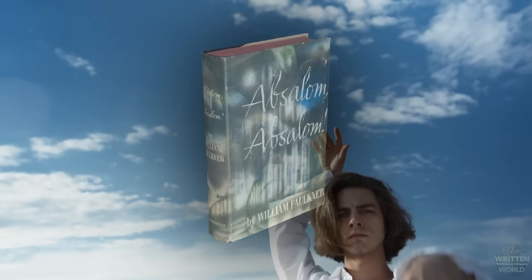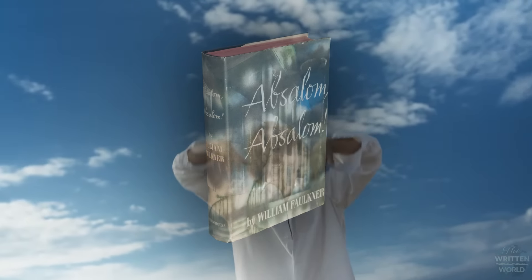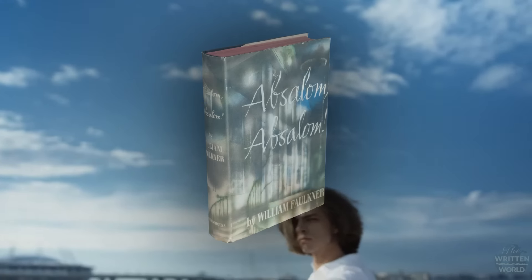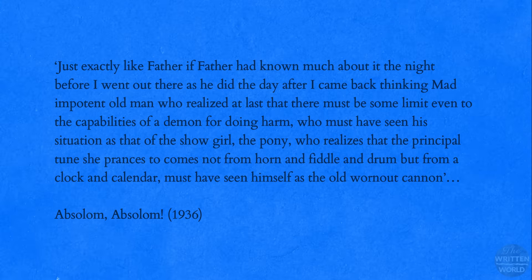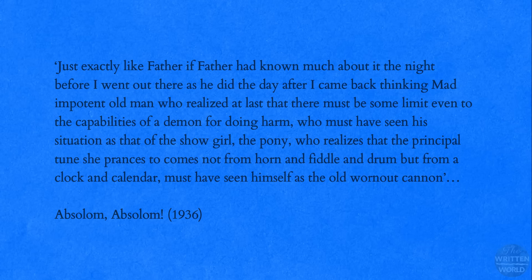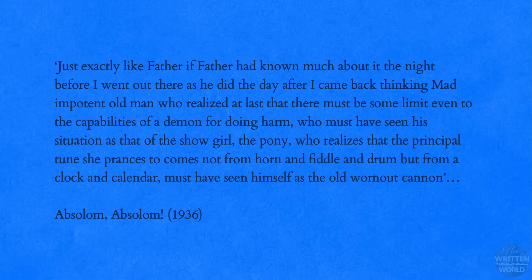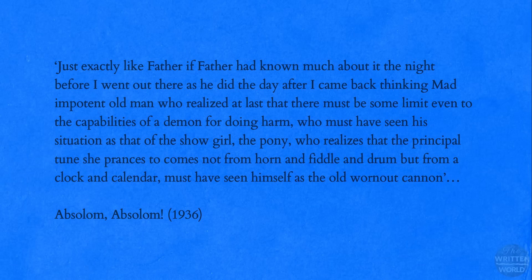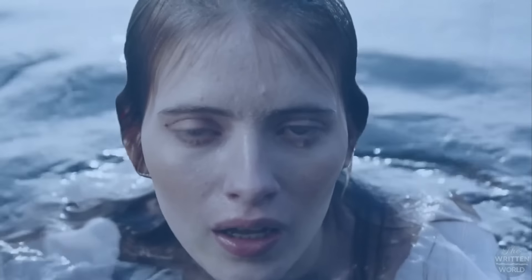Faulkner wrote one of the longest sentences in all of American literature, from his novel Absalom, Absalom! (1936) — a single sentence composed of 1,288 words in the 1951 Random House edition. Although this sentence is the extreme example, it is not at all atypical of his writing. He writes: "Just exactly like father if father had known as much about it the night before I went out there as he did the day after I came back thinking mad impotent old man who realized at last that there must be some limit even to the capabilities of a demon for doing harm who must have seen his situation as that of the showgirl the pony who realizes that the principal tune she prances to comes not from horn and fiddle and drum but from clock and calendar must have seen himself as the old worn-out canon ad infinitum."